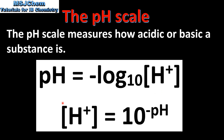If we know the pH of a substance we can calculate the concentration of hydrogen ions. The concentration of hydrogen ions is equal to 10 to the power of the negative pH.